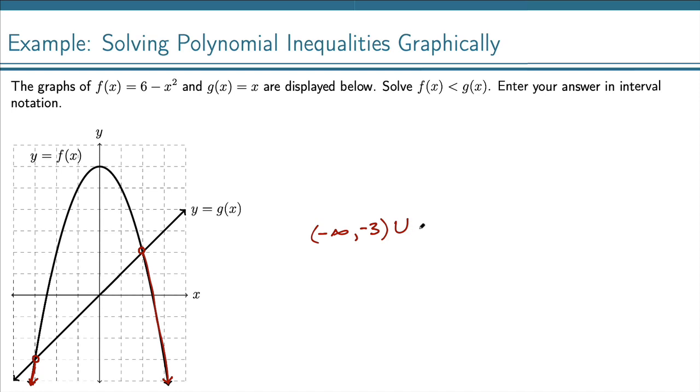We also have another one, so union. And then this piece over here to the right, it starts at x equals 2. But again, we will not include it because we're not including our endpoints. And then that goes to the right forever, so to infinity.